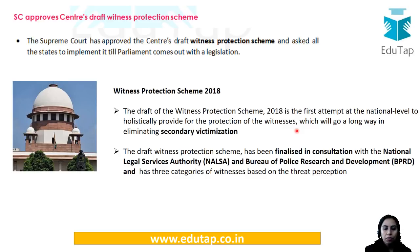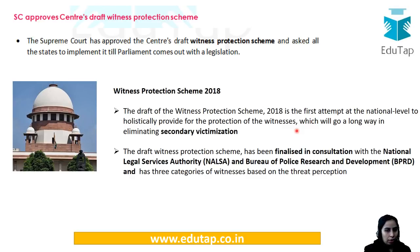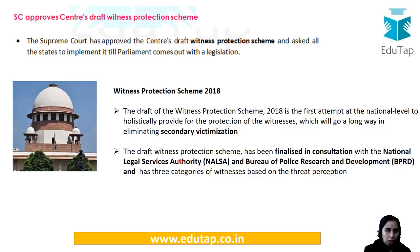The scheme actually prevents secondary victimization. Secondary victimization occurs when a victim is victimized again by the authorities involved — for example, a woman who is raped and then treated at the police station in a way that makes her feel victimized again. The scheme has been finalized in consultation with NALSA, that is the National Legal Services Authority, and BPRD. There are three categories, and going through what the scheme is about and why it exists is sufficient. If you are reading newspapers, you should be able to relate to this.